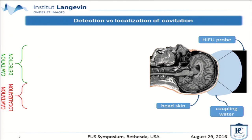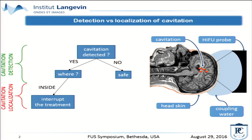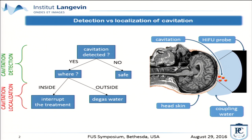The first step is to know if there is cavitation. If no, it's safe. But if there is cavitation, the second question is: where is it? If the cavitation is inside the skull, you have to interrupt the treatment. But if the cavitation is outside the skull, just try to degas the coupling water more. So the question is: are we able to localize cavitation activity?